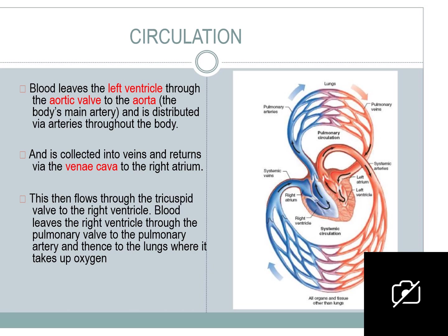Blood is collected into veins and returns via the vena cava to the right atrium — this blood is deoxygenated, meaning it has less oxygen (venous blood). It flows through the tricuspid valve to the right ventricle, then leaves through the pulmonary valve to the pulmonary artery and to the lungs where it takes up oxygen. The pulmonary veins return blood to the heart, which then pumps it through the aorta to the rest of the body.